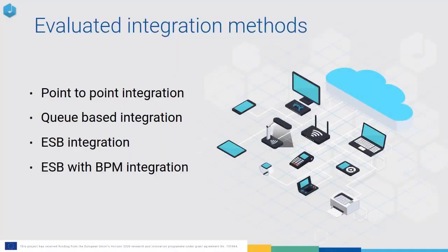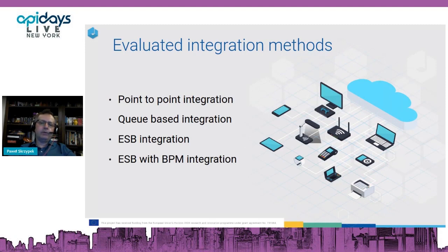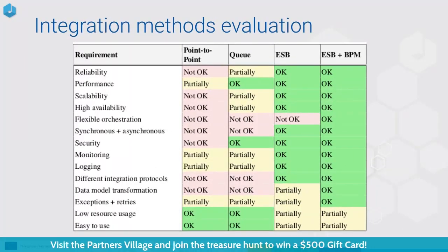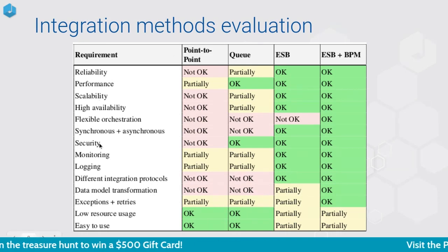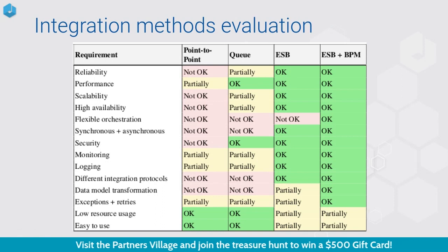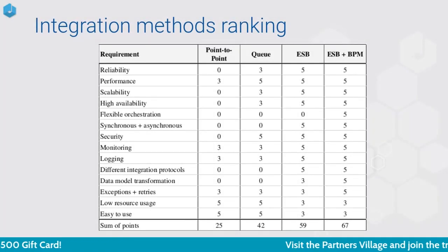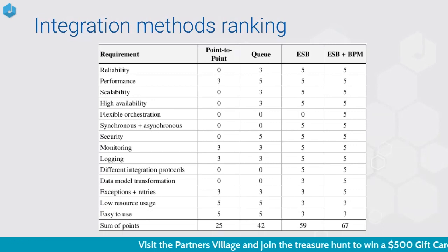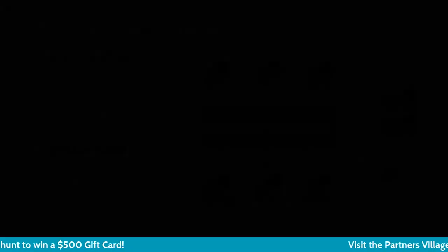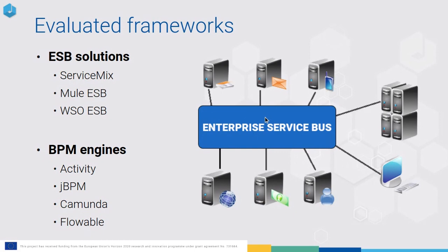Which integration method are we using? We evaluated four integration methods and decided to use ESB with BPM — Enterprise Service Bus plus Business Process Management for orchestration. We evaluated all of these methods against a set of requirements, and all details of that methodology are described in the paper. We calculated points for fulfilling each requirement and chose the most efficient integration method, which is the ESB enterprise service bus solution with workflow orchestrated by a BPM engine.